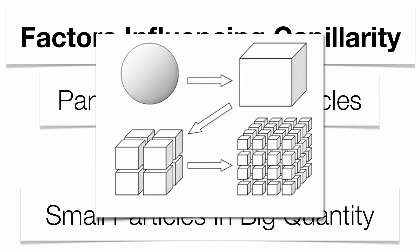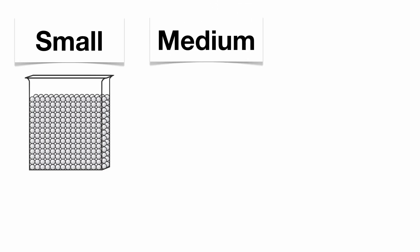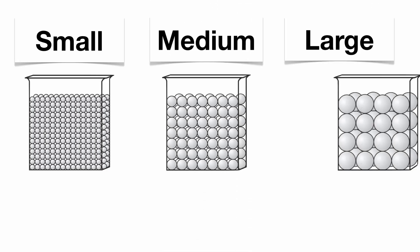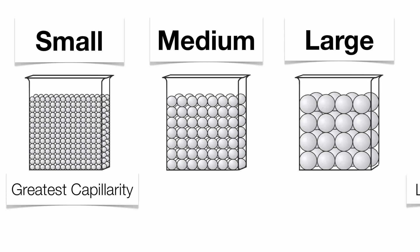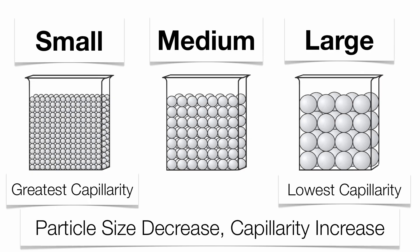You can see that you have small beads, medium beads, and large beads — similar to what we talked about with porosities. You have the greatest capillarity with small beads because you have the greatest surface area. The large beads on the right-hand side have the lowest capillarity because they have the least amount of surface area. Look at the quantity of beads — there are a lot more beads in the small beaker compared to the beaker containing large beads. So when you have small particles in big quantity, that's what we consider a big surface area. As particle size decreases, your capillarity is going to increase.